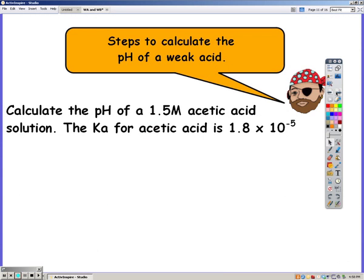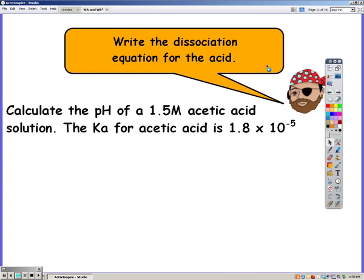Today we're going to talk about how to calculate the pH of a weak acid. The first thing you're going to do is write the dissociation equation for the acid. Our acid in this case is acetic acid, so you write acetic acid and show how it breaks apart. Since it's a weak acid, we're going to have a double-headed arrow because the reaction can go forwards and reverse until it reaches equilibrium.